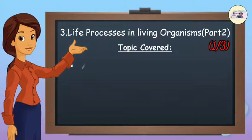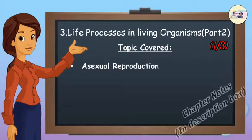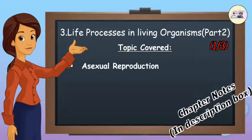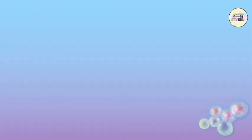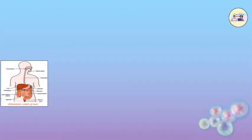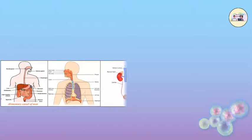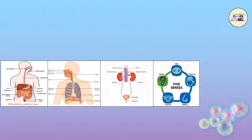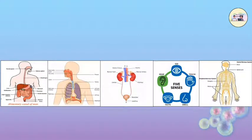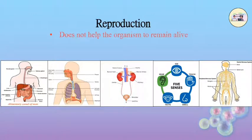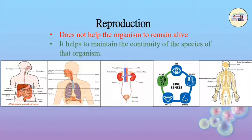Life Processes in Living Organisms. Besides life processes like nutrition, respiration, excretion, sensation and response, one more life process occurs in living organisms — it is reproduction. However, reproduction does not help the organism to remain alive, but it helps to maintain the continuity of the species of that organism.